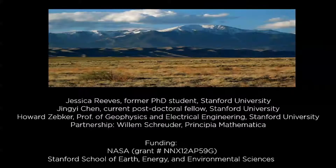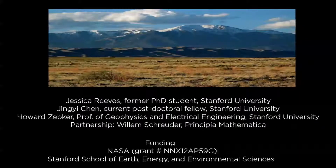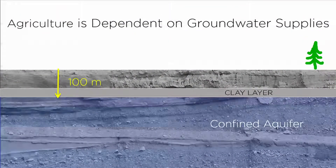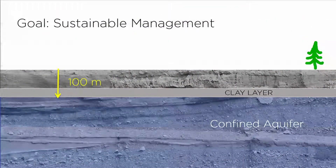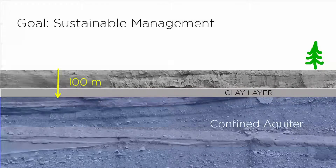What we're trying to do is demonstrate how some of the methods we're developing at Stanford can actually be used in practice for groundwater management. Agriculture in the San Luis Valley is an integral part of the local economy, and it's completely dependent upon pumping of groundwater. The water is pumped from what's referred to as the confined aquifer about 100 meters below the surface. The goal in the San Luis Valley — the goal in many places — is sustainable management of the groundwater aquifer so that we don't deplete the groundwater and then have a serious problem.